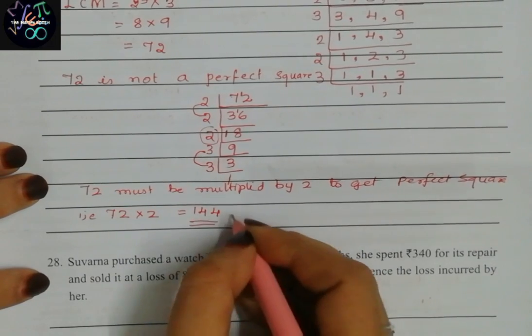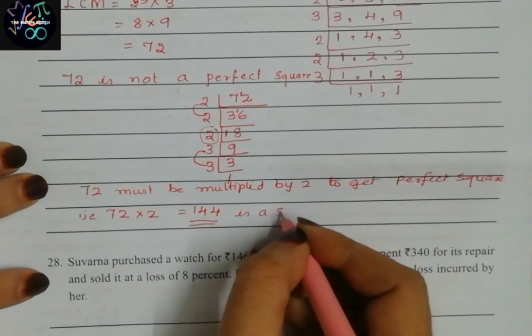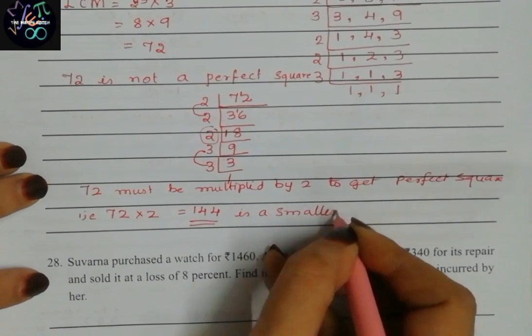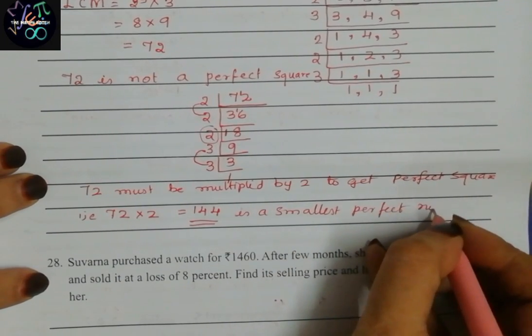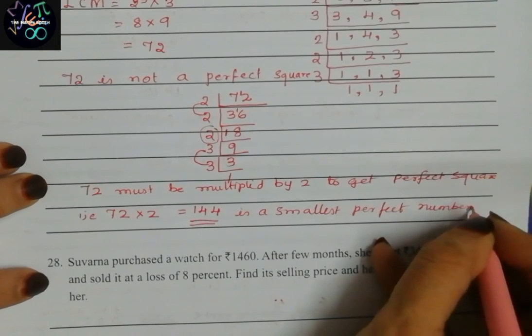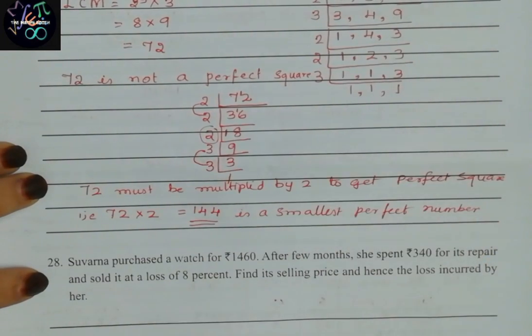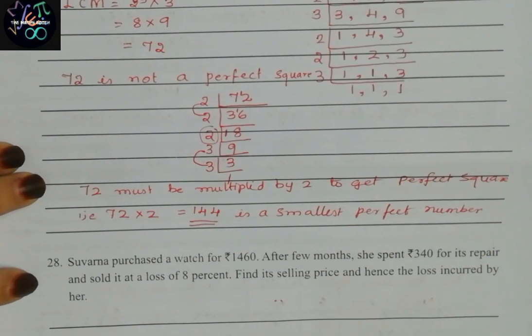We got the answer. 144 is the smallest perfect square number which is divisible by 6, 8, and 18. Let us see the next question.